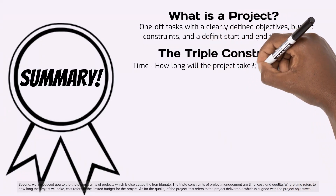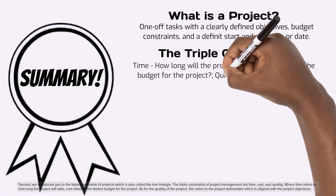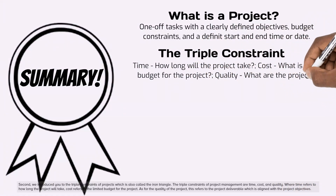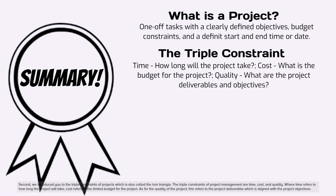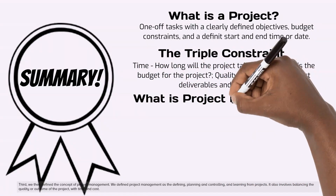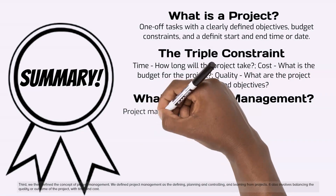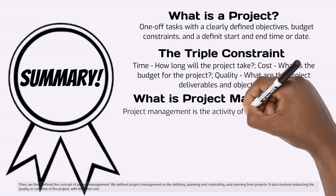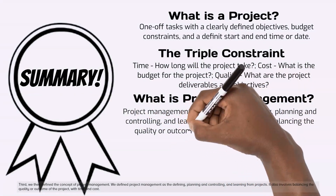Time refers to how long the project will take. Cost refers to the limited budget for the project. Quality refers to the project deliverable, which is aligned with the project objectives. Third, we defined project management as the defining, planning and controlling, and learning from projects. It also involves balancing the quality or outcome of the project with time and cost.